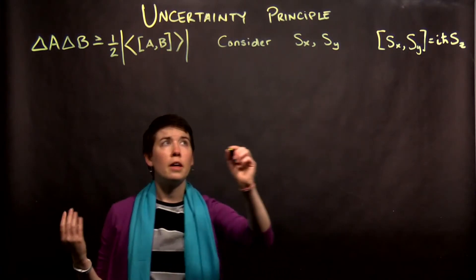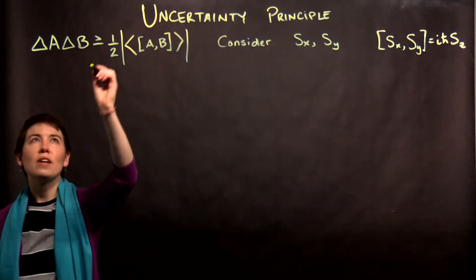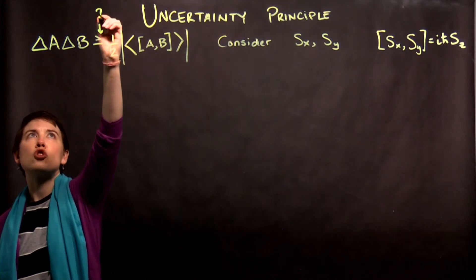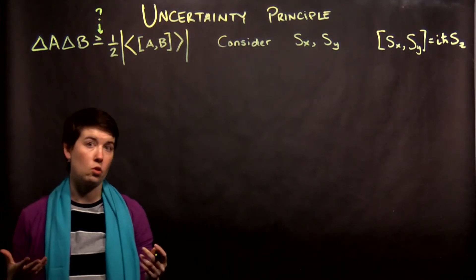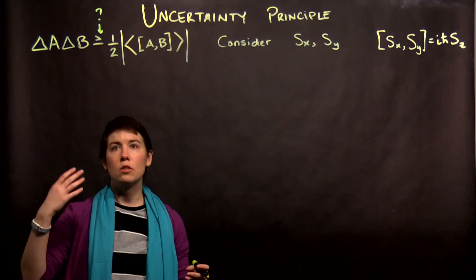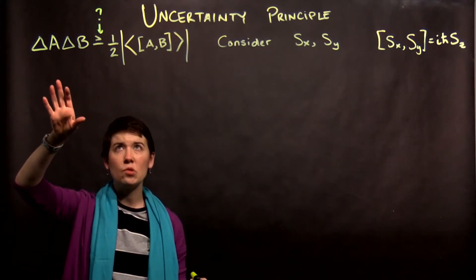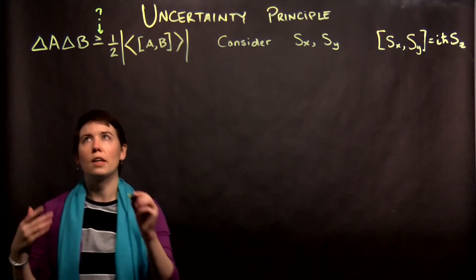So briefly let's just consider Sx and Sy. So effectively what we're going to do is check that this holds for a specific situation. You can use this to put a constraint on any of these three things, or in this case we'll just check and say,